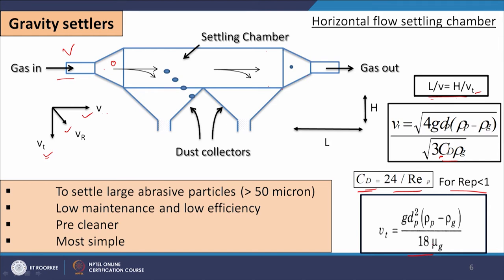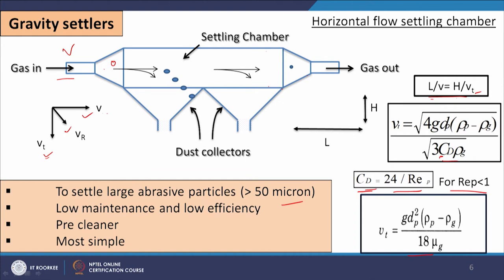This expression is for the terminal settling velocity of a particle falling in the laminar zone where the particle Reynolds number is less than 1. Gravity settlers are very simple and not costly. They are useful to settle large abrasive particles greater than 50 microns. They have low maintenance, low efficiency, and are considered as a pre-cleaner. For separation of very fine particles this may not be a good device, but for relatively larger particles it is a good and simple option.